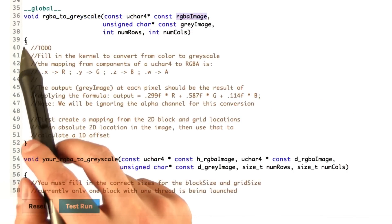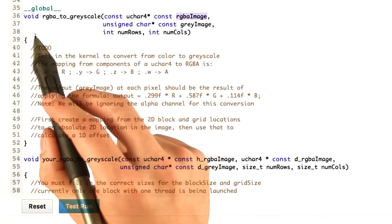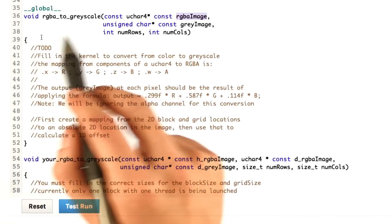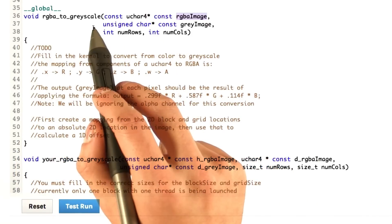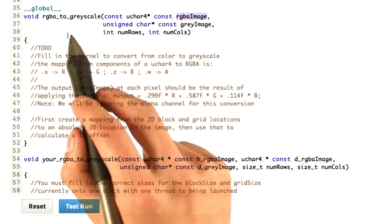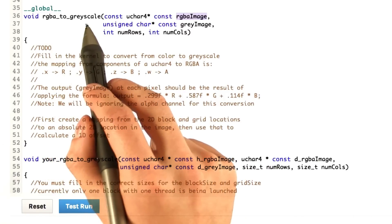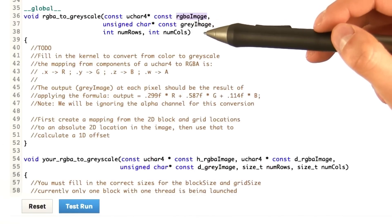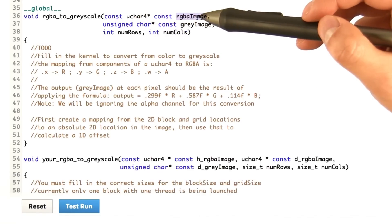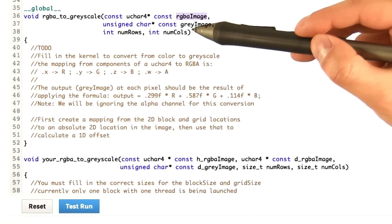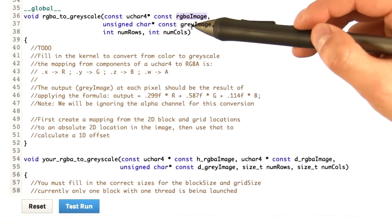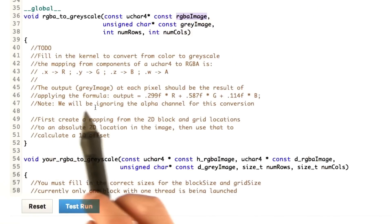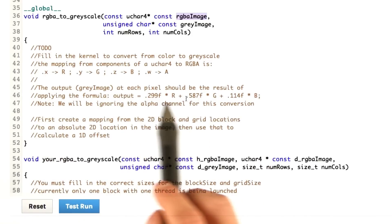Let's look at problem set number 1 and the code you will actually have to write for this assignment. You have two jobs to do. For the first part, your job is to fill in the RGBA to grayscale function. We will pass you an array of uchar4 which represents the pixels in the color image, and your job is to convert each pixel in this 2D array into an intensity value that you will write back to this 1D array called gray image. You will follow the formula that we talked about in the previous slide.